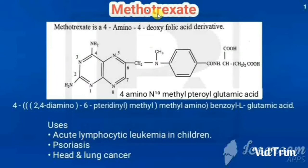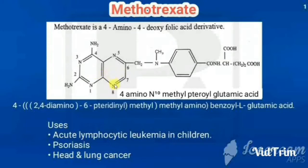This is the structure of methotrexate. The heterocyclic ring present here is called pteridine. Pteridine is a fusion of two heterocyclic rings: one is the pyrimidine ring and another is the pyrazine ring. The numbering starts from 1, 2, 3, 4, 5, 6, 7, 8.